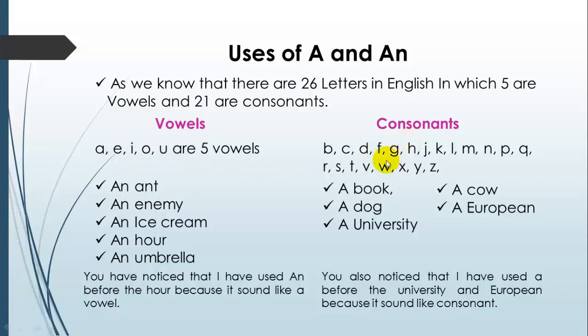And there are 21 consonants in English: B, C, D, F, G, H, K, L, M, N, P, Q, R, S, T, V, W, X, Y, Z.